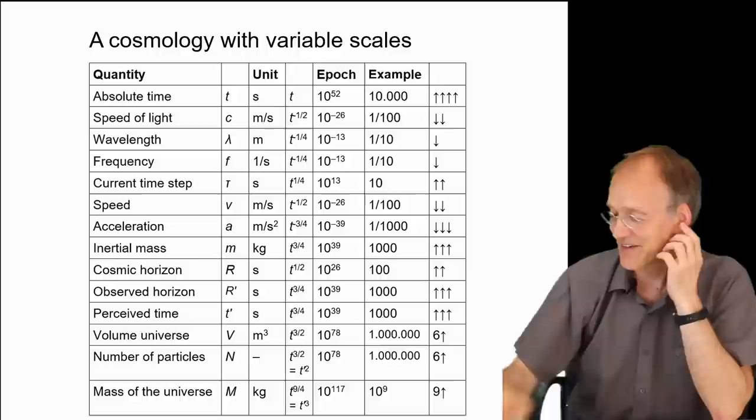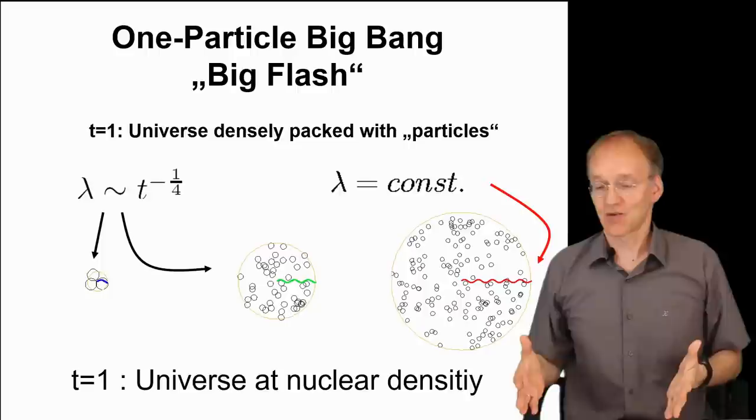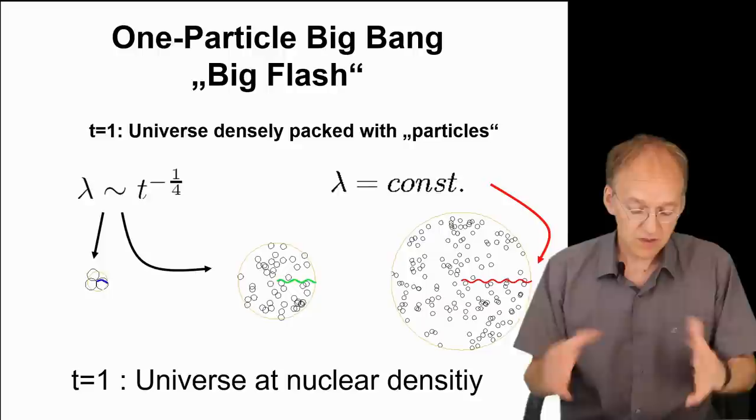This is also related to Dirac's large numbers, as I explained in another video. But now the question today is: what happens at t equals one? That's what we consider. It's just a logical consequence if you go back in time.